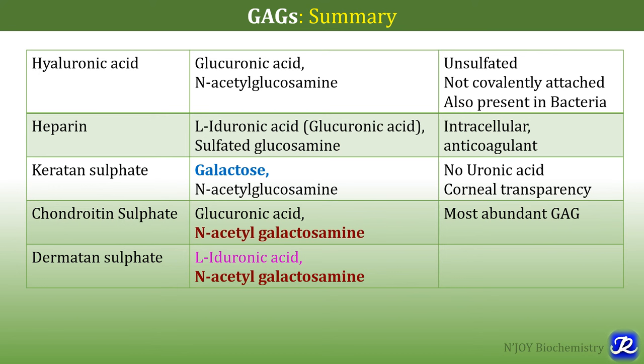Let's summarize today's topic — glycosaminoglycans, which are heteropolysaccharides also called mucopolysaccharides. The examples are hyaluronic acid, heparin, heparan sulfate, keratan sulfate, chondroitin sulfate and dermatan sulfate. Hyaluronic acid is made up of glucuronic acid and N-acetylglucosamine — the uronic acid is glucuronic acid and the sugar is glucosamine. It is an unsulfated GAG with no sulfate group present. Hyaluronic acid is not covalently attached to any protein and is also present in bacteria.